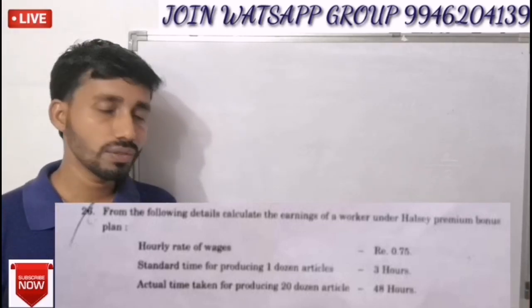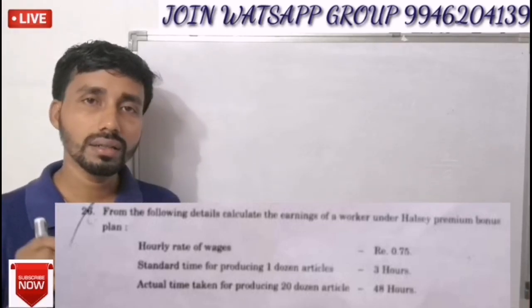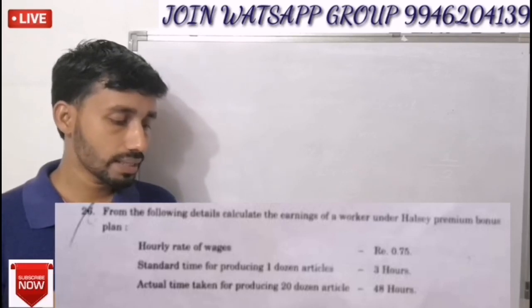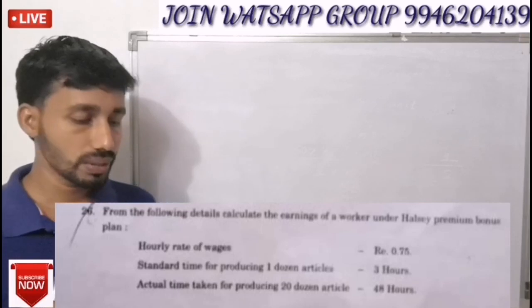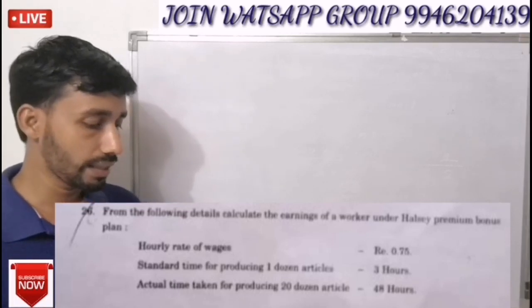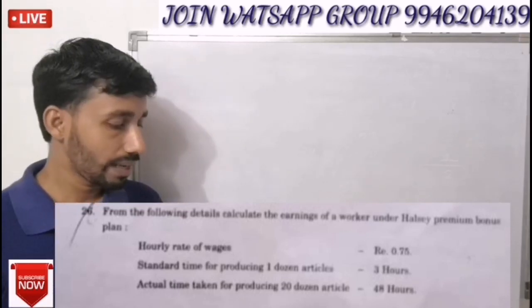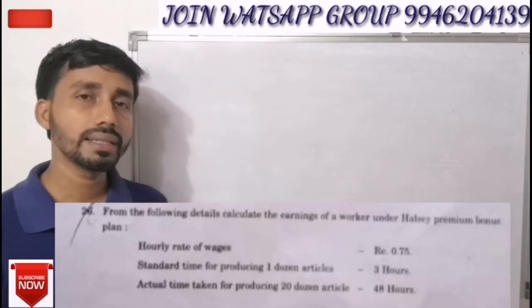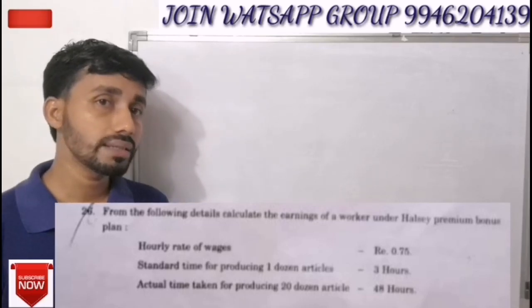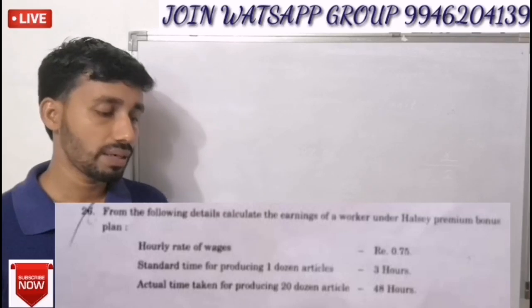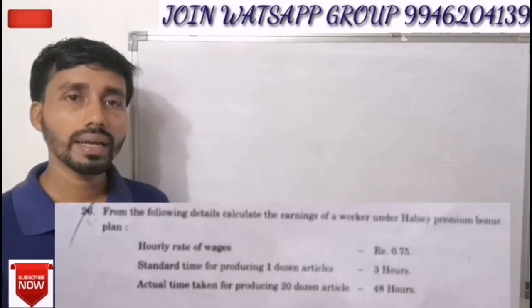Hourly Rate of Wages is 0.75. Standard Time for producing 1 dozen is 3 hours. Actual Time taken for producing 20 dozen — the actual time is 48 hours.